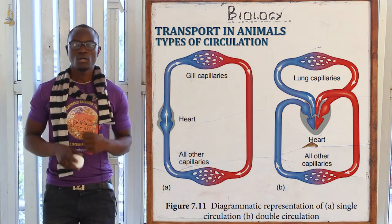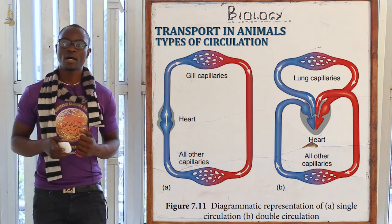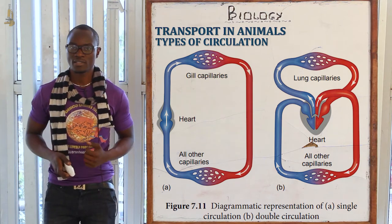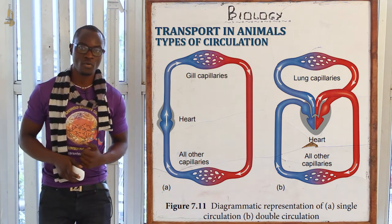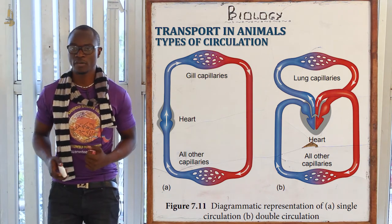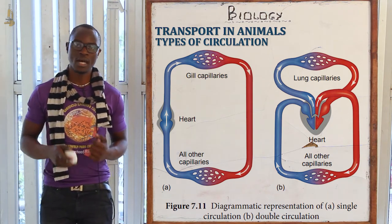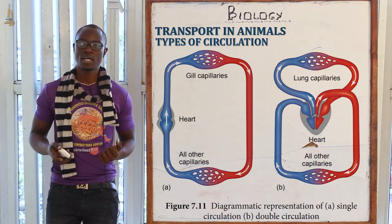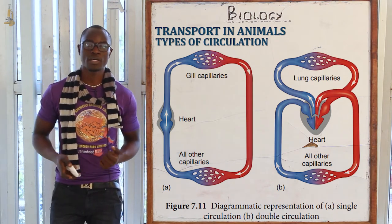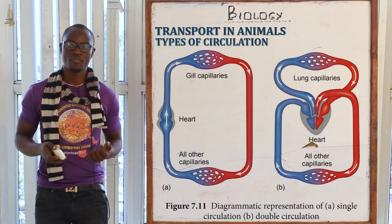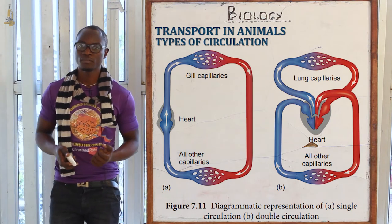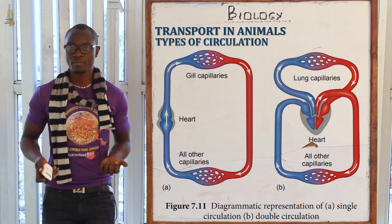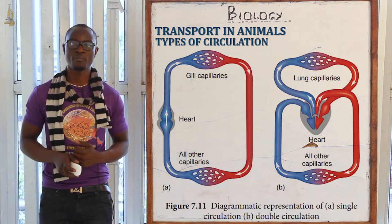When blood passes through the heart twice before going to the rest of the body, this type of circulation is called double circulation. Examples of organisms that undergo double circulation include mammals, amphibians, and reptiles.